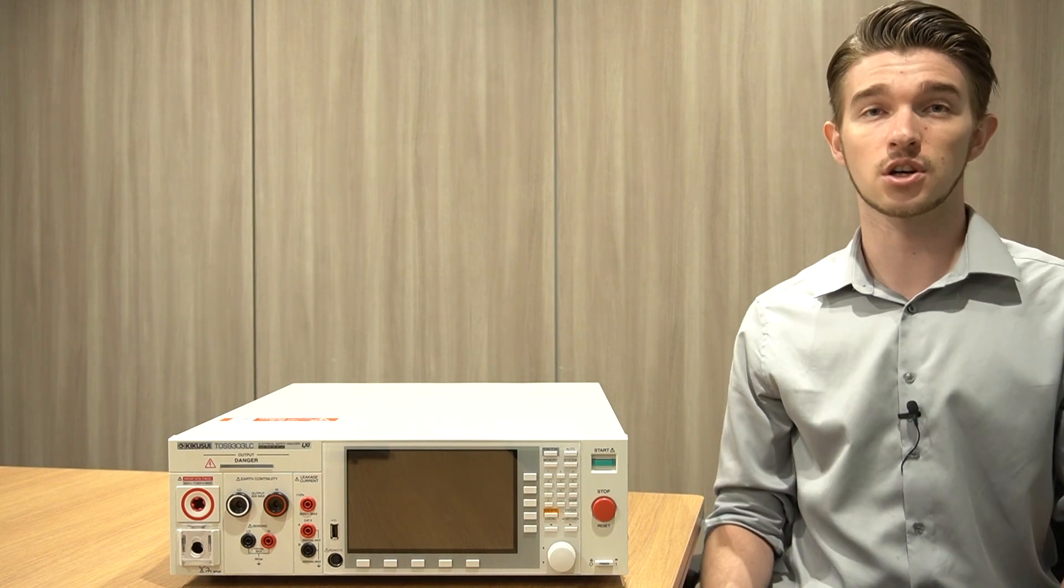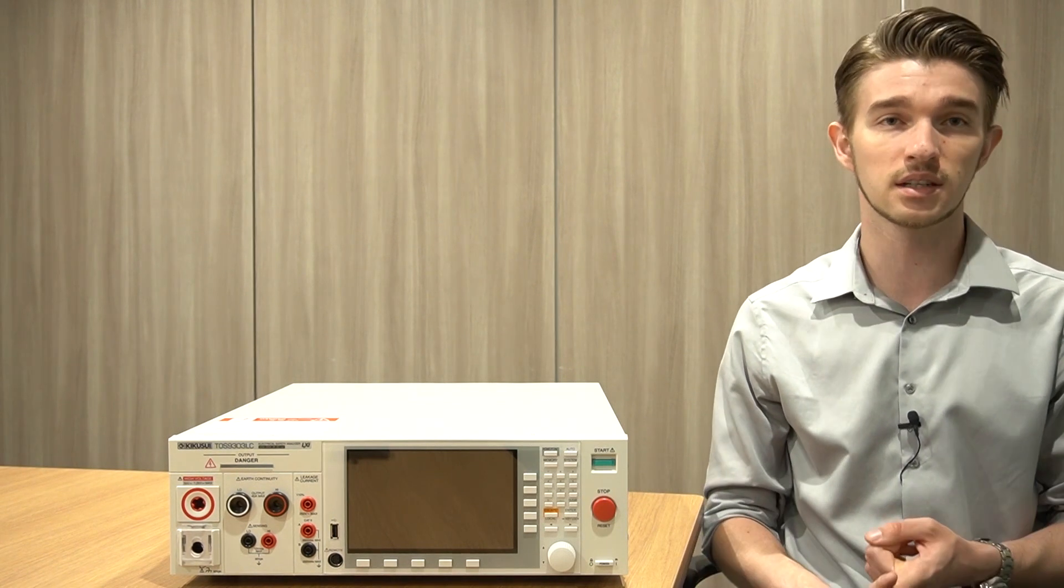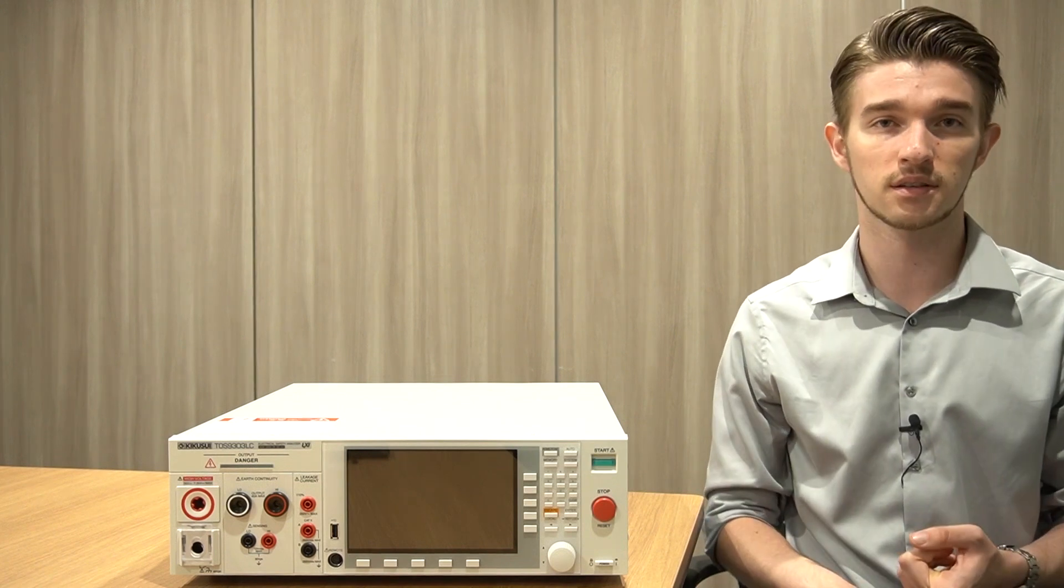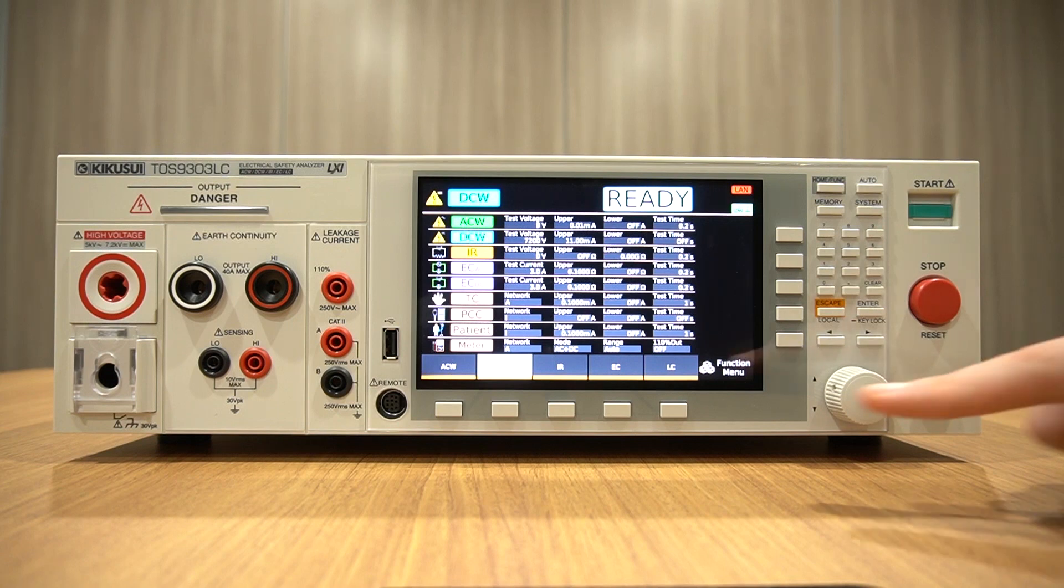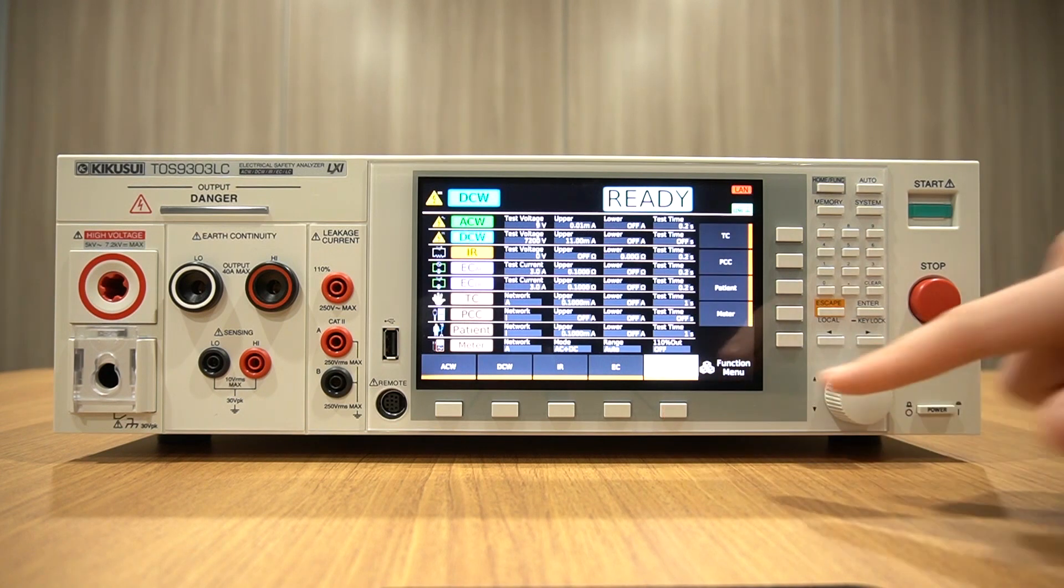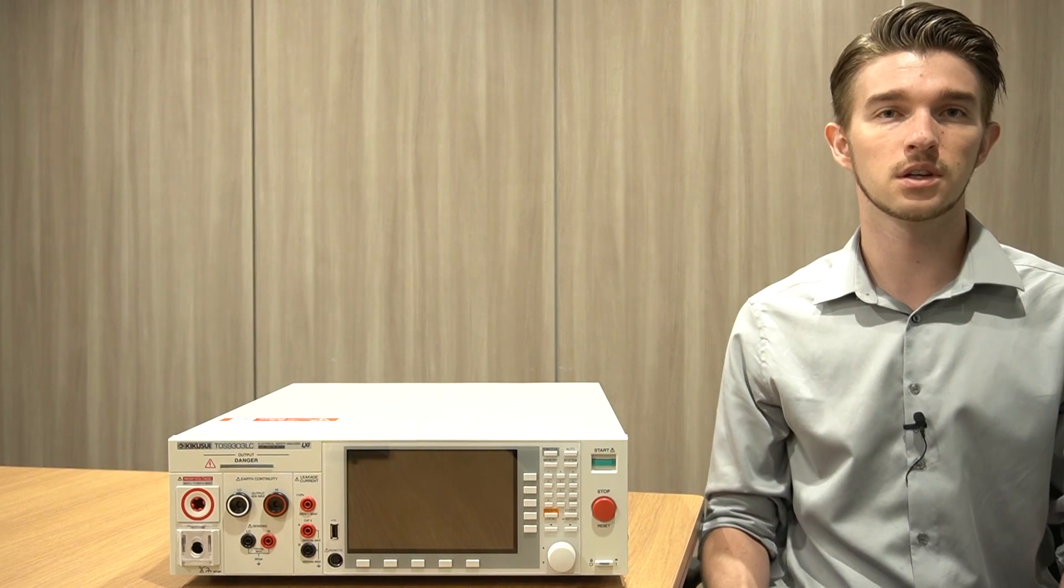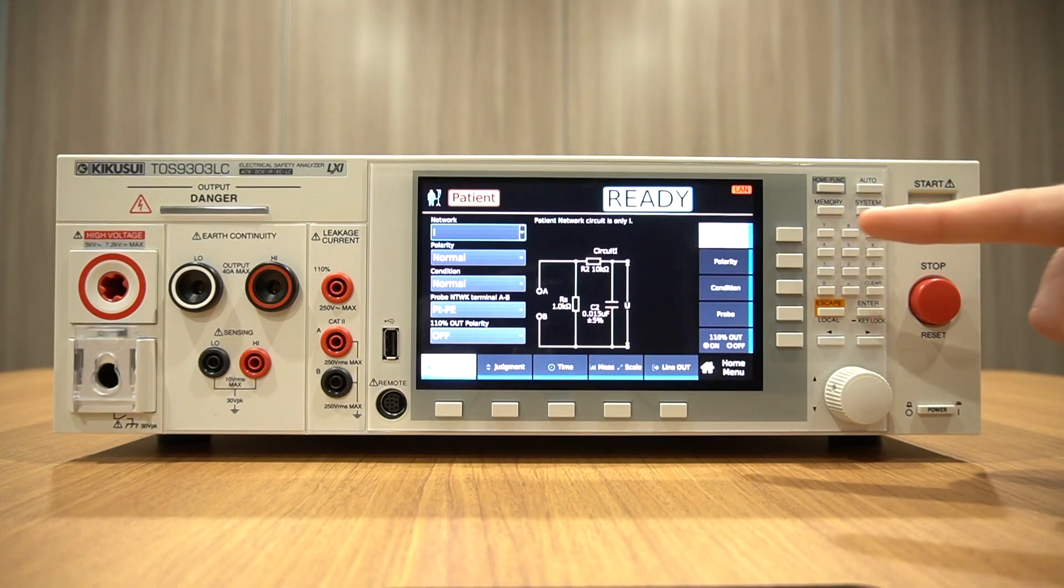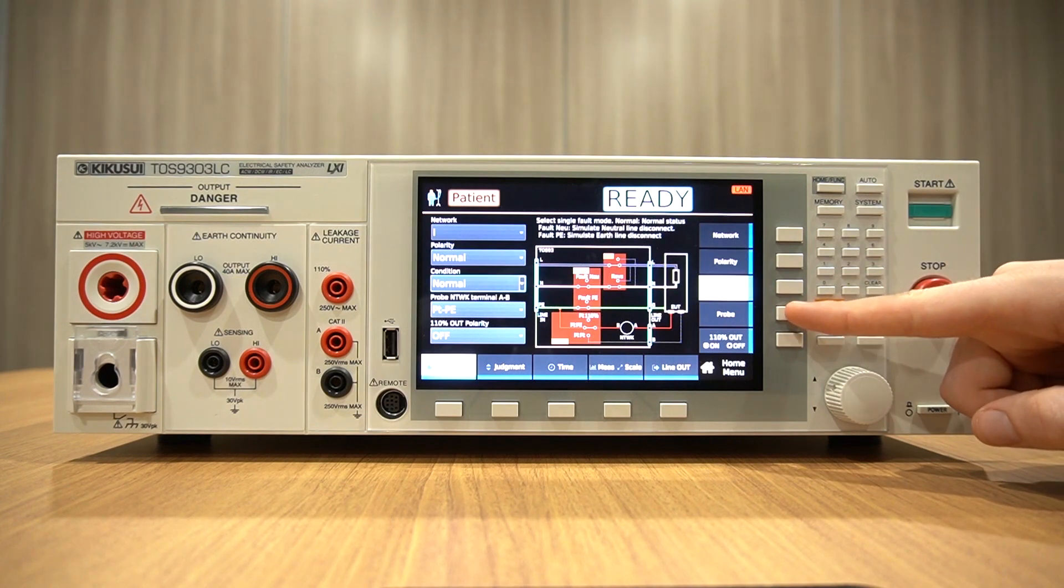Conducting a patient leakage current test with the TOS 9300 is as simple as setting test conditions, starting the tests, and making judgments. In order to make your test settings, press LC from the function menu screen, and then press patient. From here, you can configure a wide variety of settings, including polarity, upper and lower limits, test time, and measurement ranges.